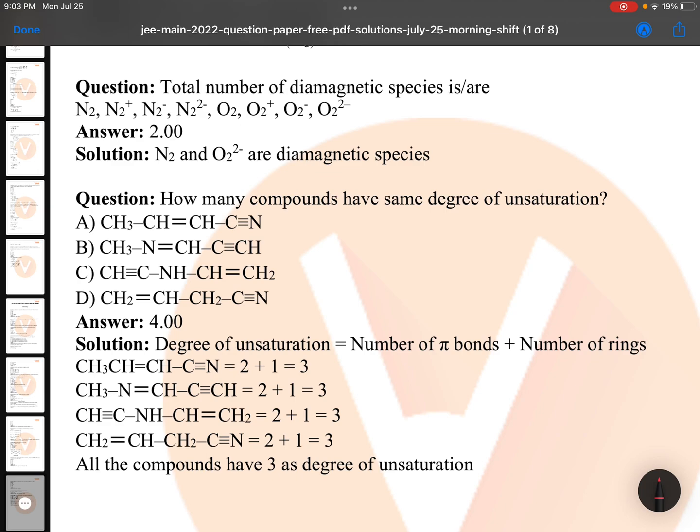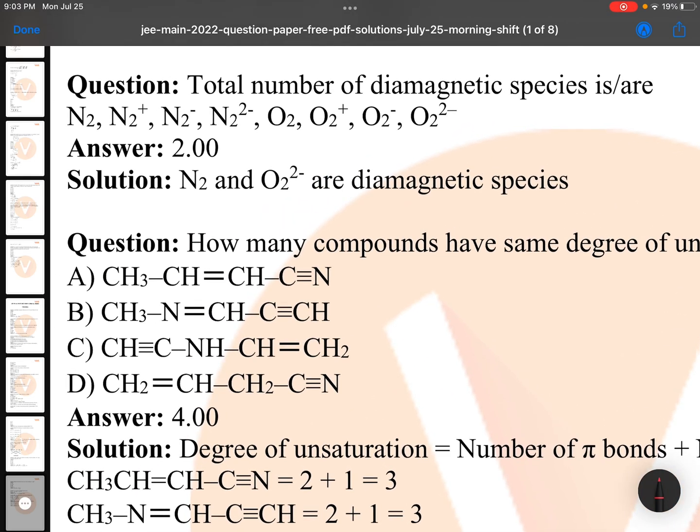Total number of diamagnetic species? Don't confuse here, it's a very simple question actually. N2 is diamagnetic, N2 plus para, N2 minus para because even number of electrons are there. N2 minus 2, you can see 16 electrons.